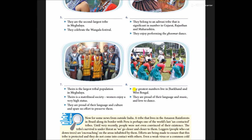The greatest number live in Jharkhand and West Bengal. They are proud of their language and music and love to dance. The name of this tribe is Santhals — S-A-N-T-H-A-L-S.